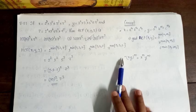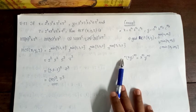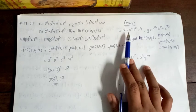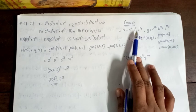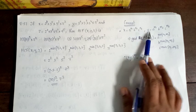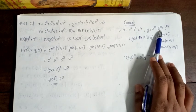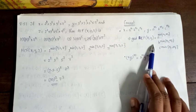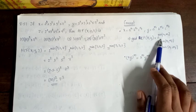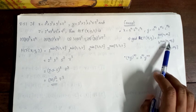For HCF, if x equals a raised to n1 into b raised to n2 into c raised to n3, and y equals a raised to m1 into b raised to m2 into c raised to m3, we take the minimum powers of each prime factor.